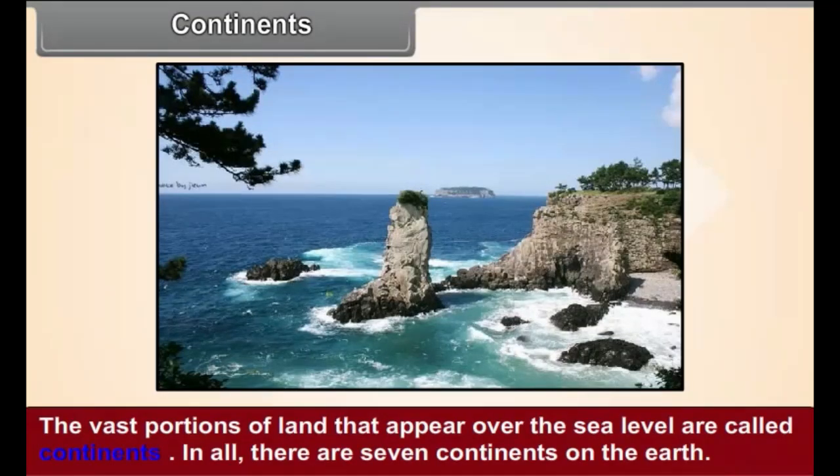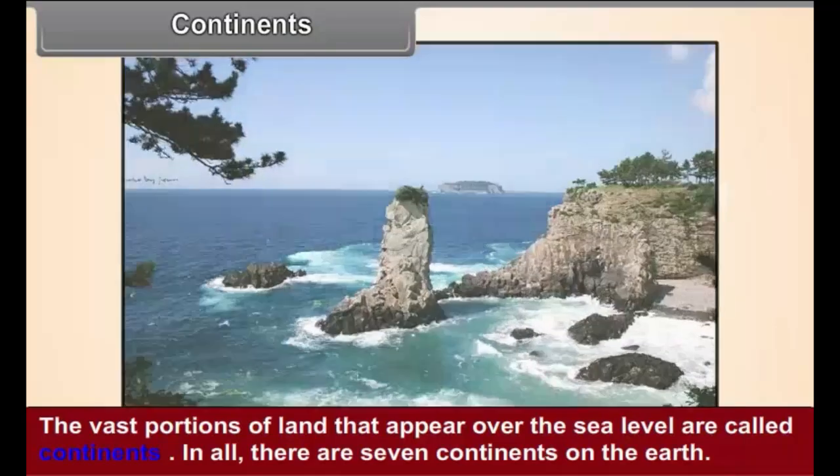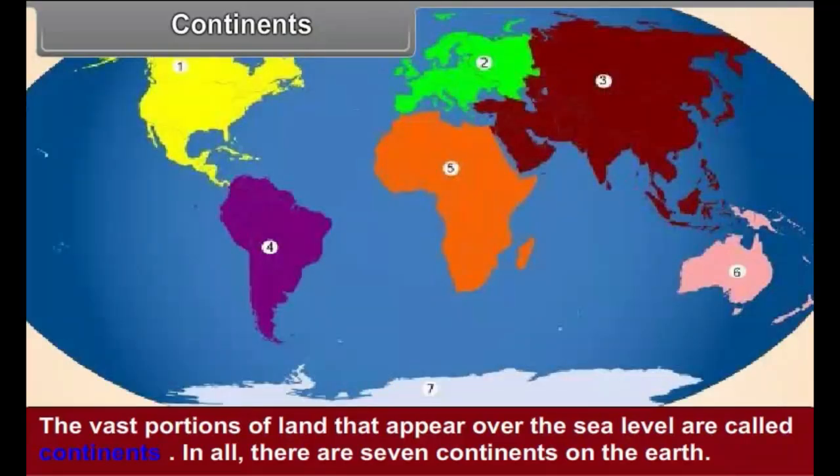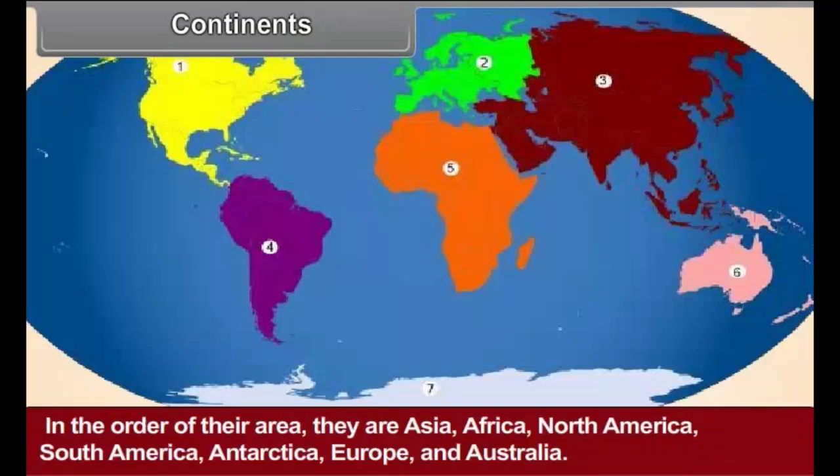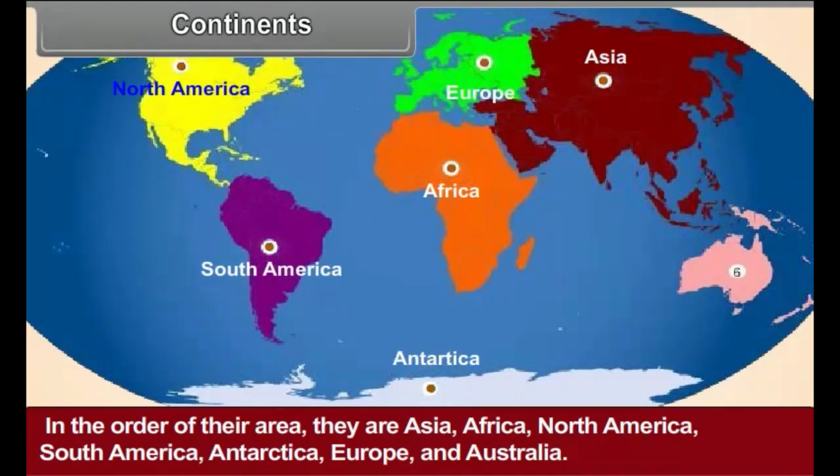Continents. The vast portions of land that appear over the sea level are called continents. In all, there are seven continents on the Earth. In the order of their area, they are Asia, Africa, North America, South America, Antarctica, Europe and Australia.